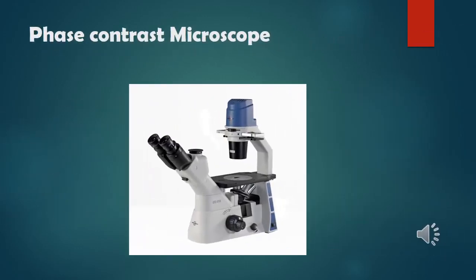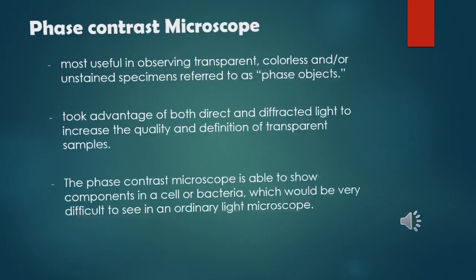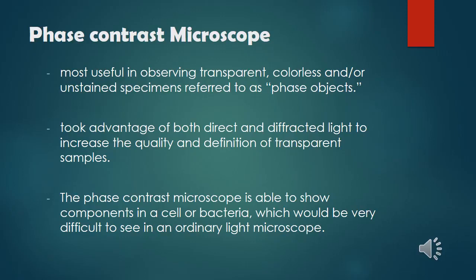This is the phase contrast microscope. A phase contrast microscope is most useful in observing transparent, colorless, and or unstained specimens referred to as phase objects. It takes advantage of both direct and diffracted light to increase the quality and definition of transparent samples. The phase contrast microscope is able to show components in a cell or bacteria which would be very difficult to see in an ordinary light microscope.